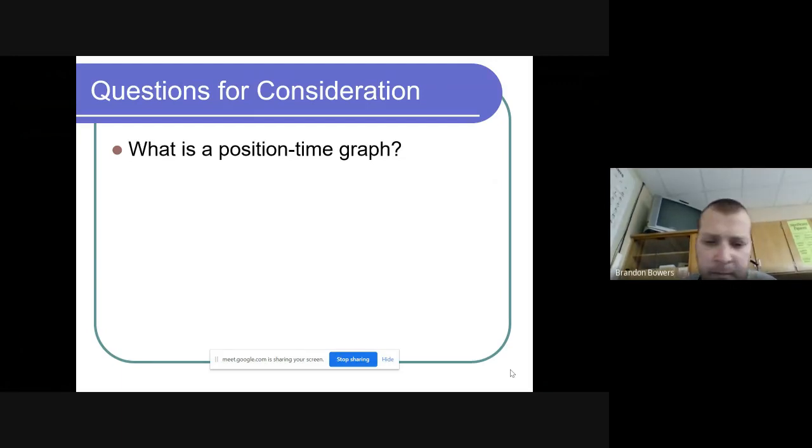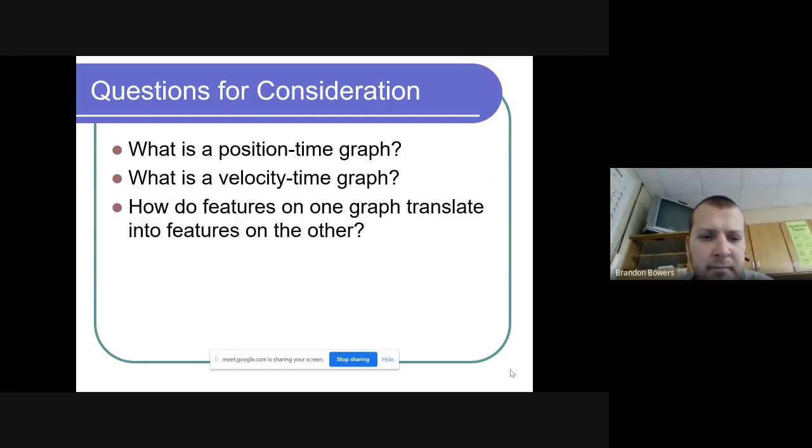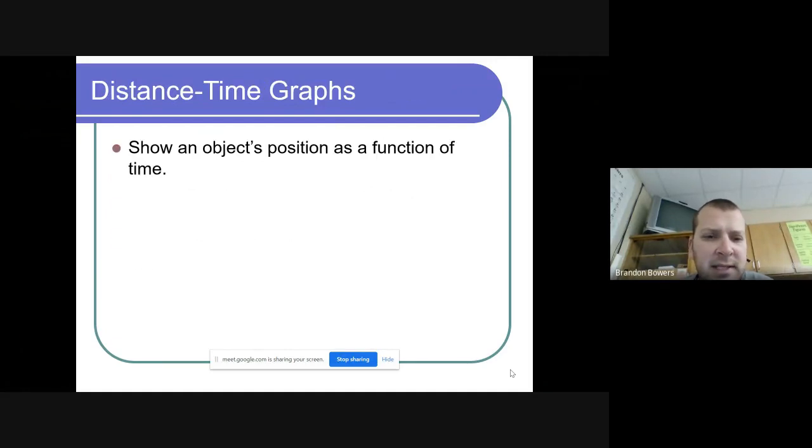A distance-time graph shows the object's position as a function of time. The x-axis is always going to be time, which continues to go on and on, whereas the y-axis is the distance traveled.